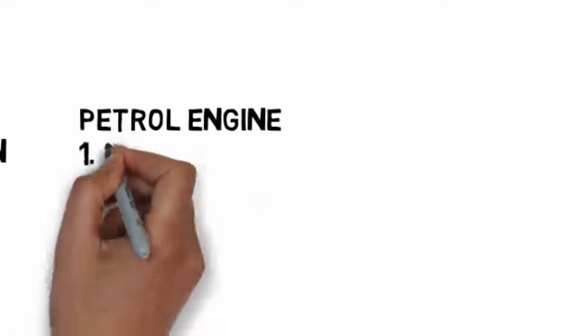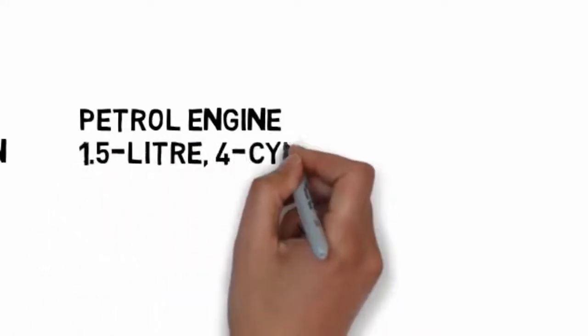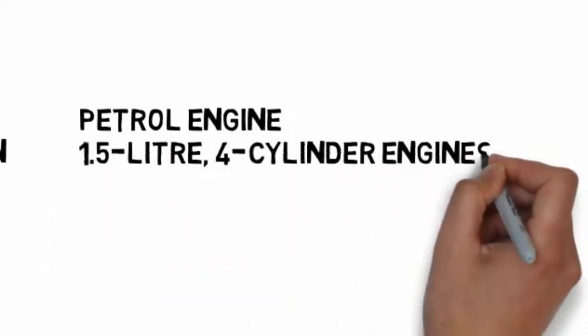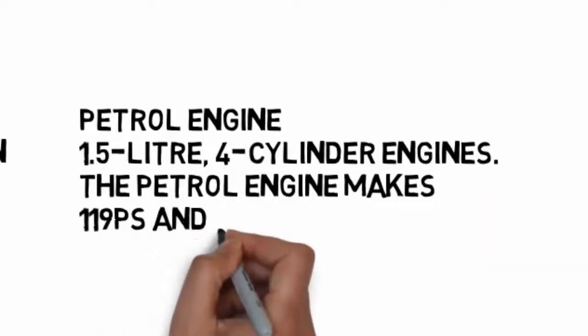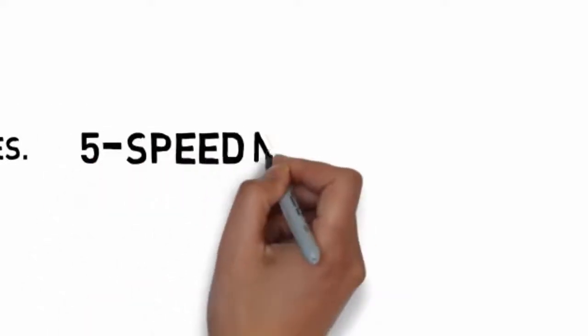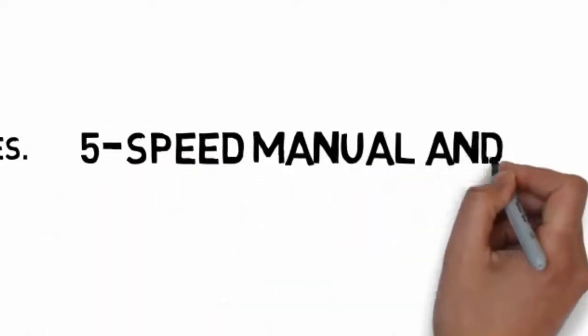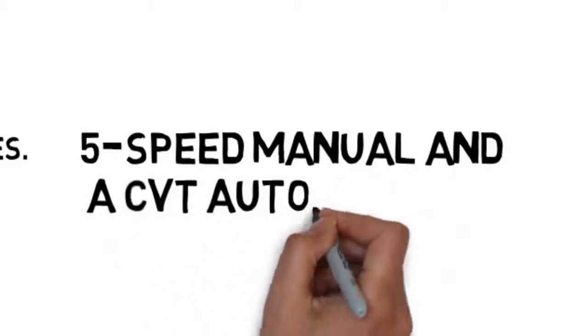Let's look into the engine of this car. The petrol engine is a 1.5L 4-cylinder engine and outputs 119 PS of power at 145 Nm of torque. The transmission is a 5-speed manual transmission for the petrol variant. It also comes with a CVT automatic transmission.